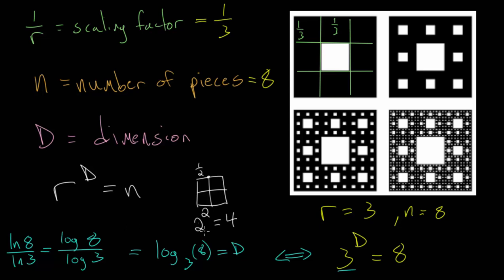And when we plug this into our calculator, we can find that D is equal to 1.8927, and this will go on forever since this is an irrational number. But if we raise 3 to this exponent here, we will get 8. And in the next video, we will look at how to calculate the area of this Sierpinski carpet, which we will show is equal to 0.